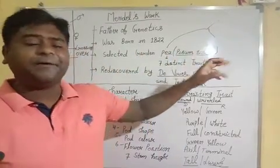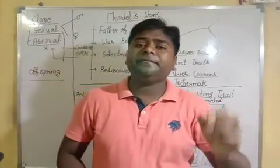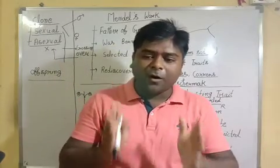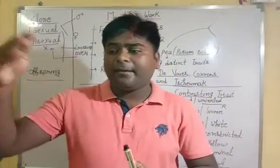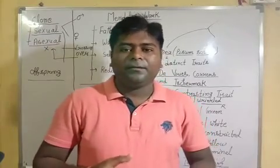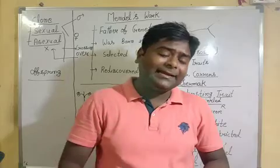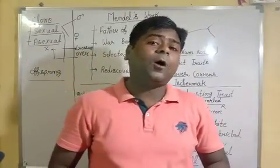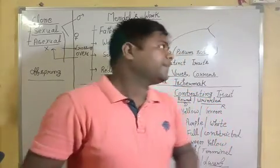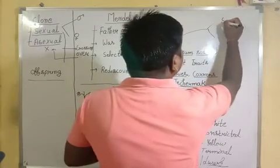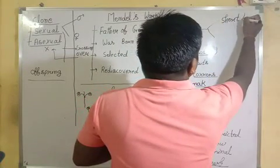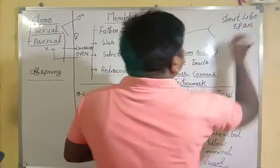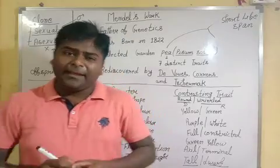If Mendel had selected any perennial plant, he would not have got results early. The short lifespan was the first reason for his success. The second reason: because he was a priest, he had a place around the church, and that place was easily used by Mendel to cultivate Pisum sativum, because it is very easy to cultivate.